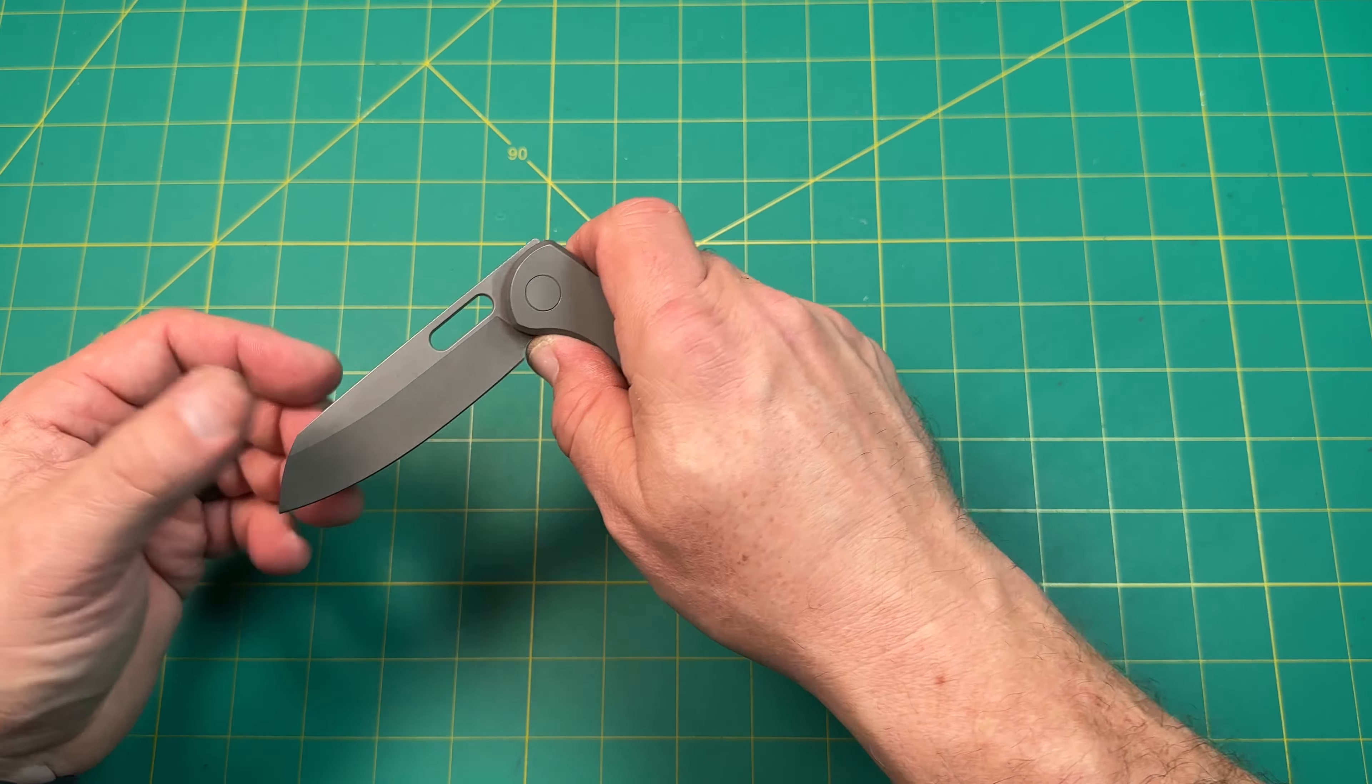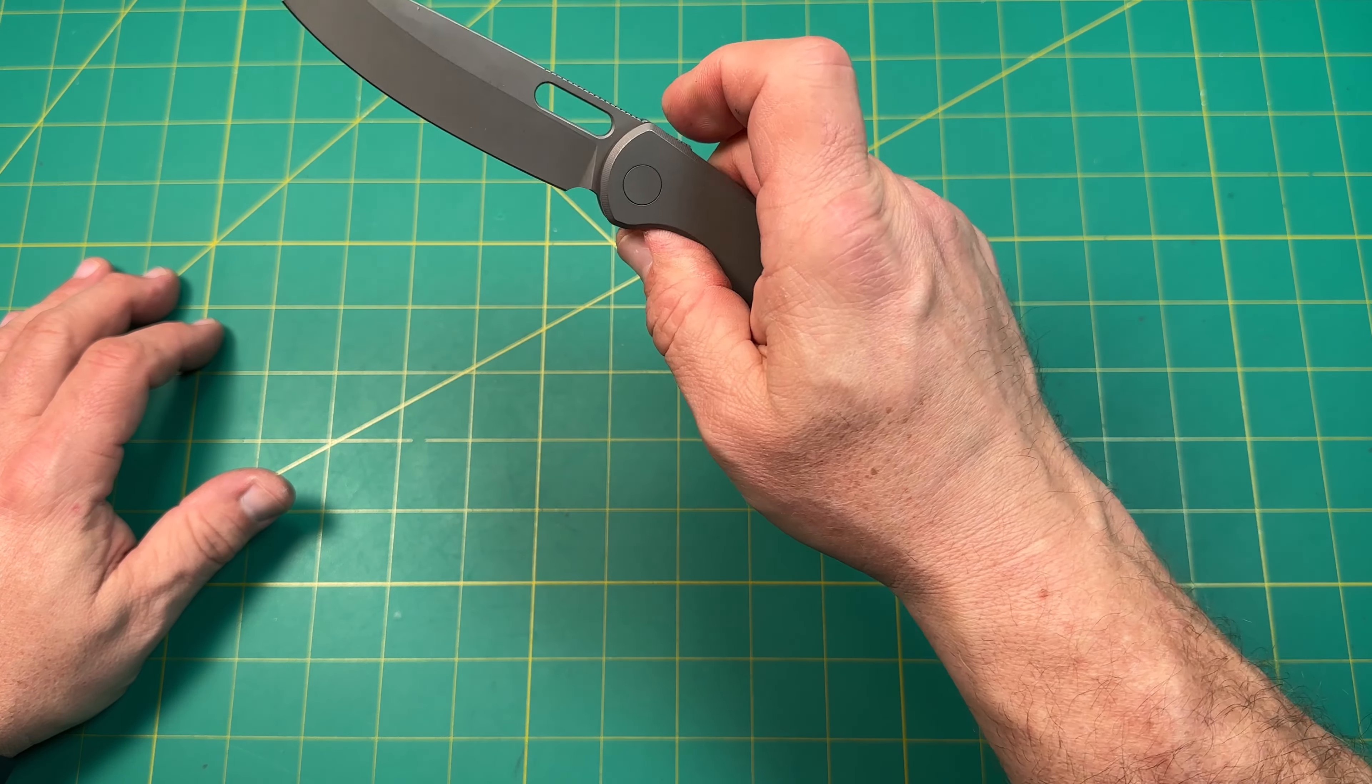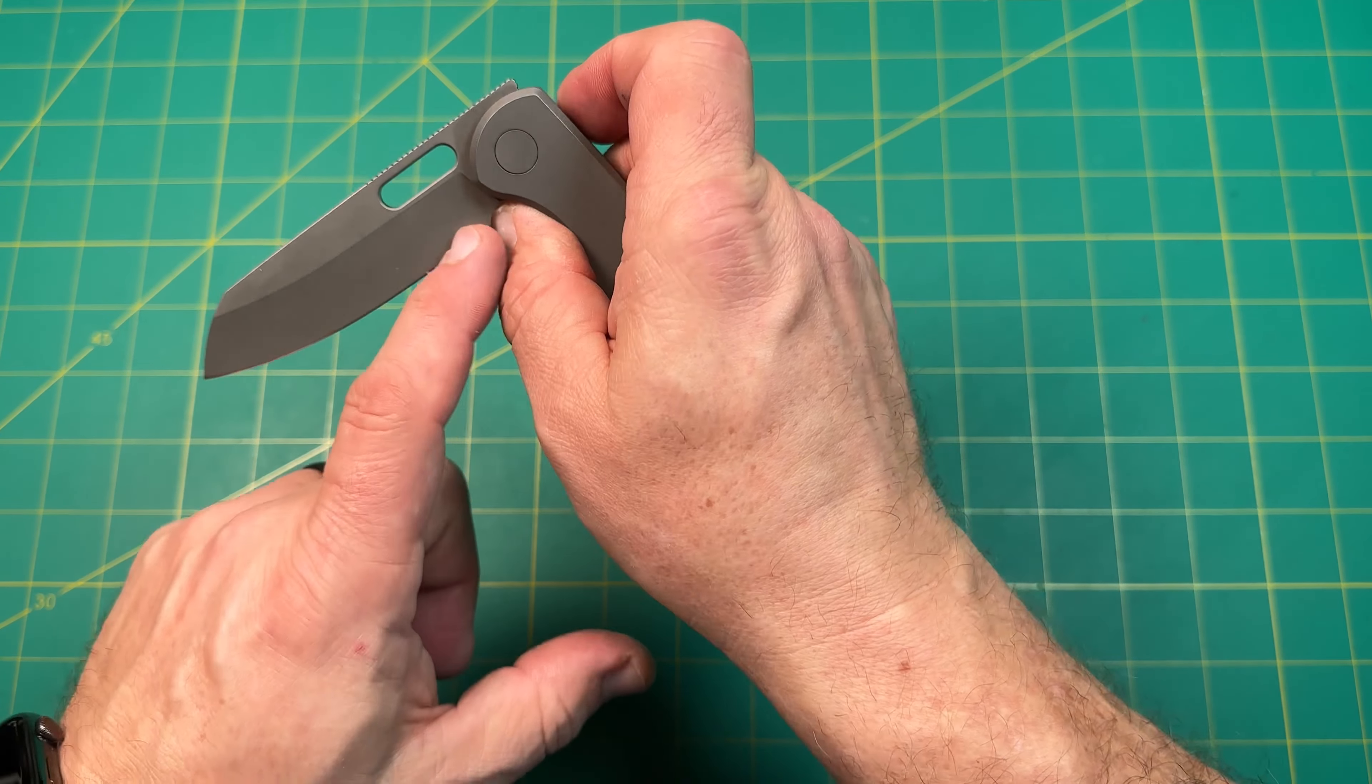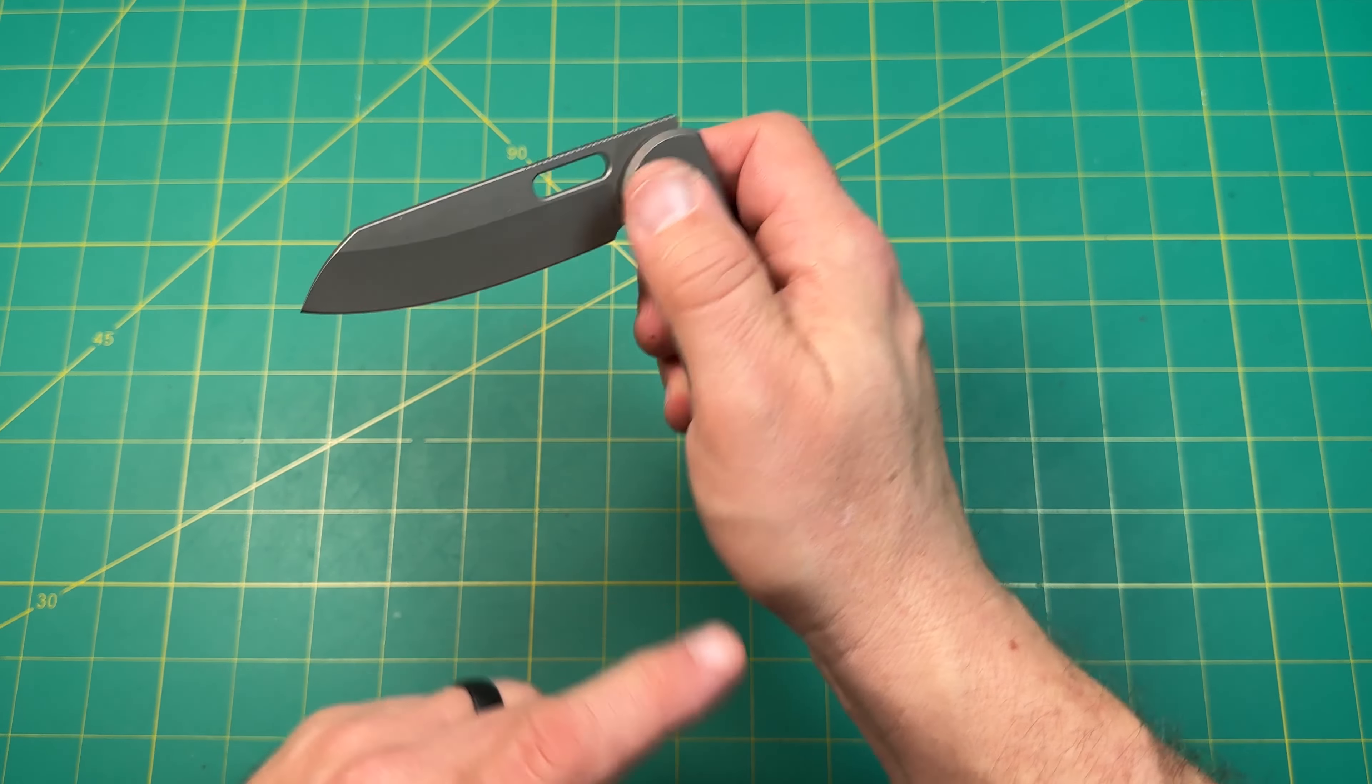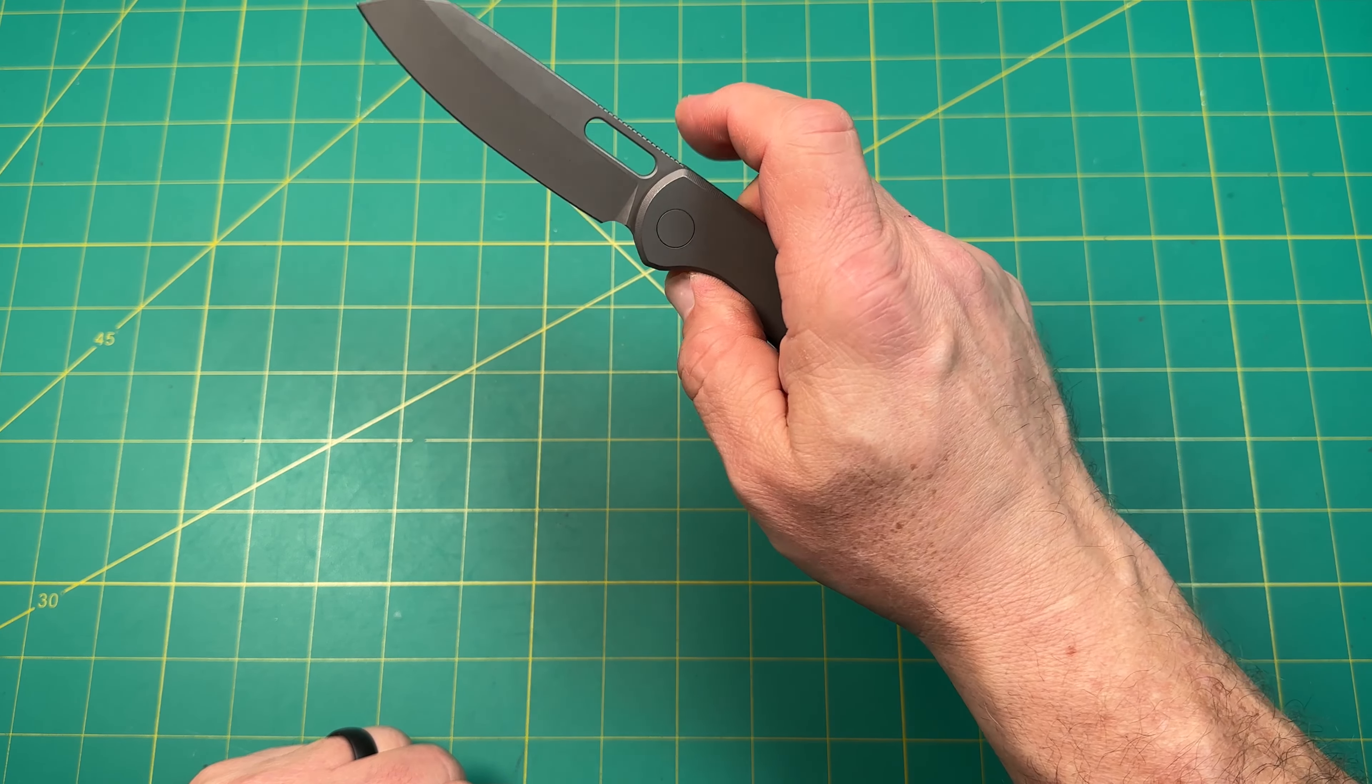And I like the fact that there's a sharpening finger choil right there where I can, when I drop it, see, it catches right there. So I don't have to worry about the guillotine on the finger. I do like that. To me, that's important, right? So really cool.